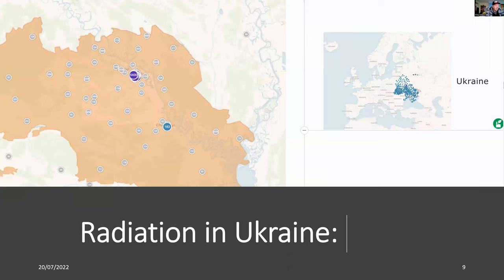I'm also looking at quite a notorious site in Ukraine. Besides having a war with Russia, Ukraine is still suffering from the effects of radiation leakage at Chernobyl. You can see the counts per minute at Chernobyl on the world map is 5,400 — a very, very high count. It's not a place you want to visit.